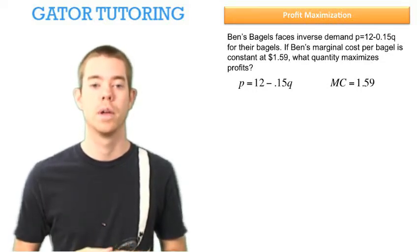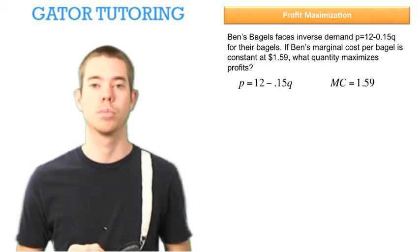So we're looking for Q star. Again, P equals 12 minus 0.15Q and marginal cost equals 1.59.